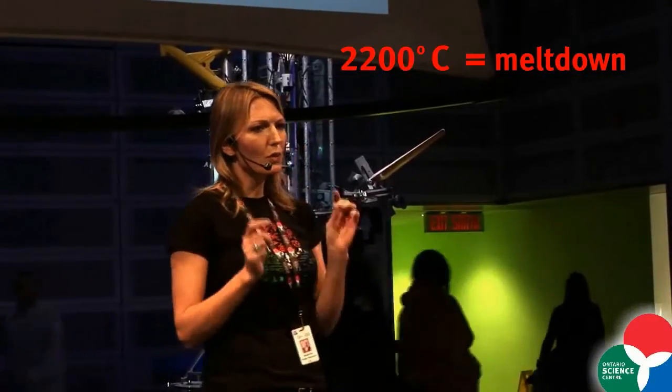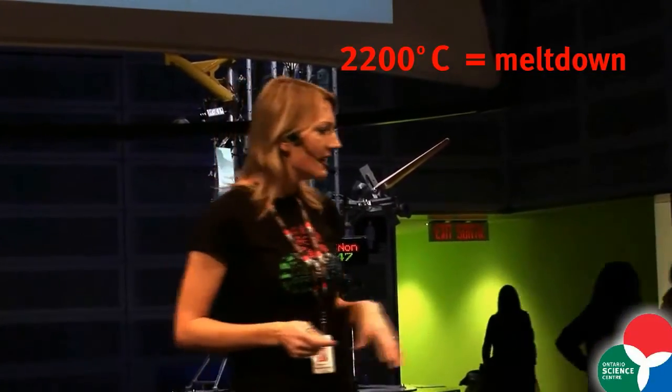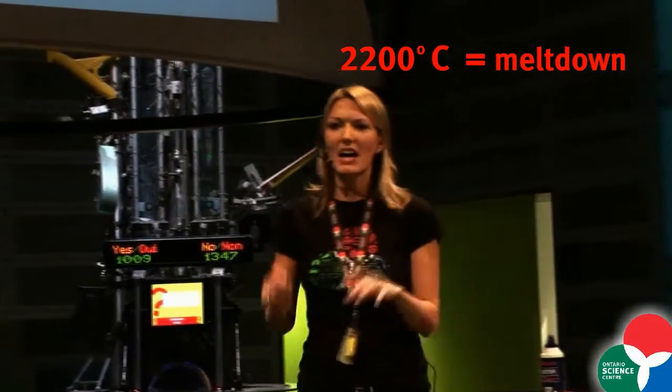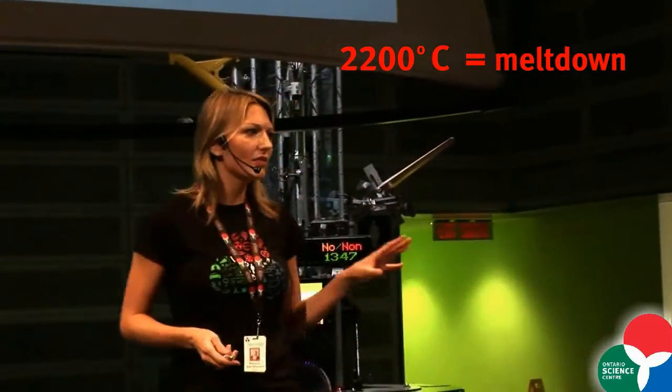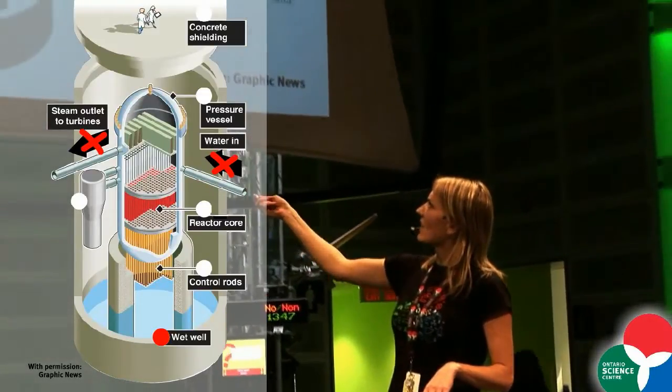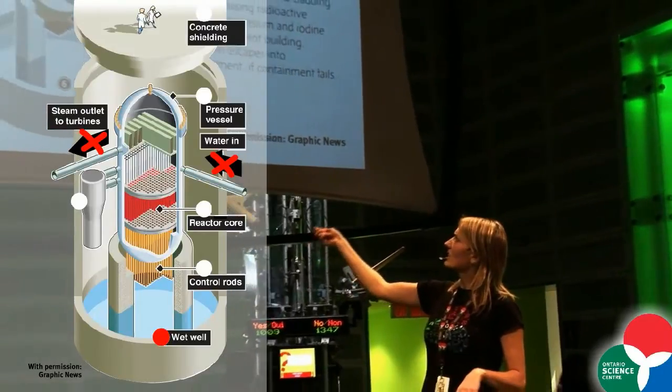If it keeps getting hotter and hotter, once you hit 2,200 degrees Celsius, the uranium inside of these fuel rods actually starts to melt. It turns into a viscous fluid. And when that happens, it flows out of the rods and flows down into the bottom of the nuclear reactor here.